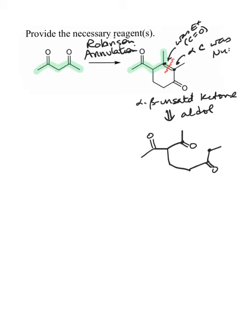So the second disconnection I'm going to make comes from the fact that this is a 1,5-dicarbonyl. A 1,5-dicarbonyl, if we can count our carbons here, one, two, three, four, five, and the disconnection we have there is going to be at this alpha carbon.